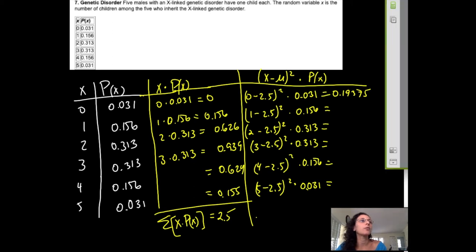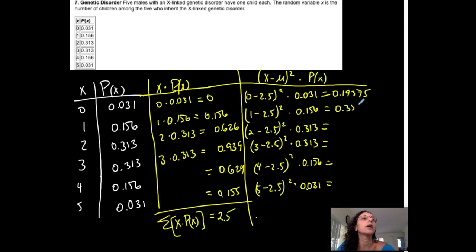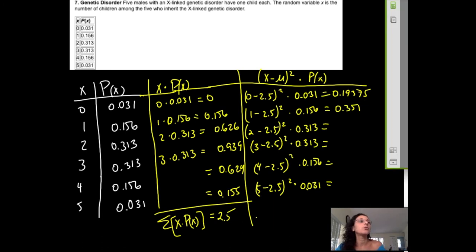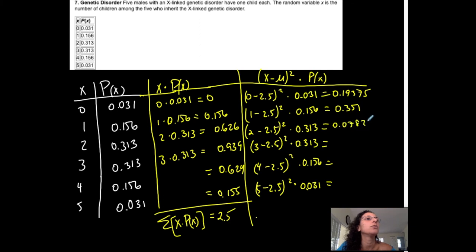If you guys go ahead and let me know what you get. 1 minus 2.5 for my next one. Then square that. Then multiply by that probability, 0.156. 0.351.